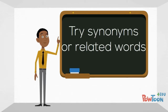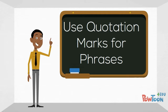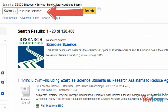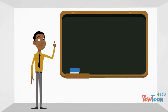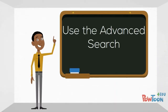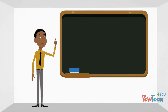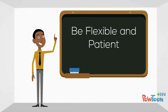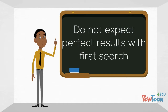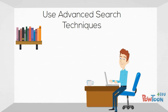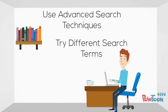Another tip was to use quotation marks when searching for phrases. This told the database to find only articles that had his two words right next to each other, which can help significantly limit the number of results. He could also use the advanced search to add additional search terms and combine those search terms in different ways, using the AND, OR, or NOT options. The librarian explained the importance of being flexible and patient when searching a database, rather than expecting his results would be perfect the first time. By using advanced search techniques and trying different combinations of search terms, Mark was soon able to search databases more effectively.